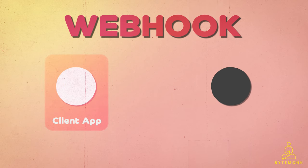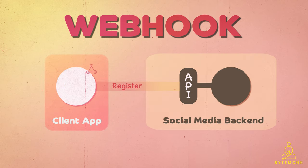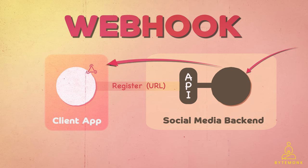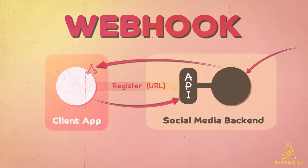Here is how it works technically. The client application registers a webhook with the social media application, specifying a URL where notifications should be sent. Whenever there is a new update, the social media application sends a notification to the registered webhook URL. The client application receives and processes the notification — this could involve fetching new updates from the server, updating the user interface, or performing some other action. The client then sends a response back to confirm it has received and processed the notification.